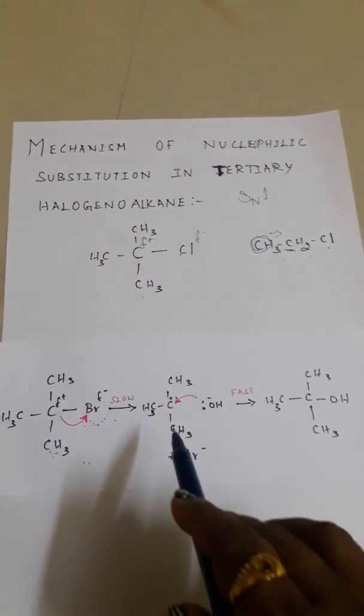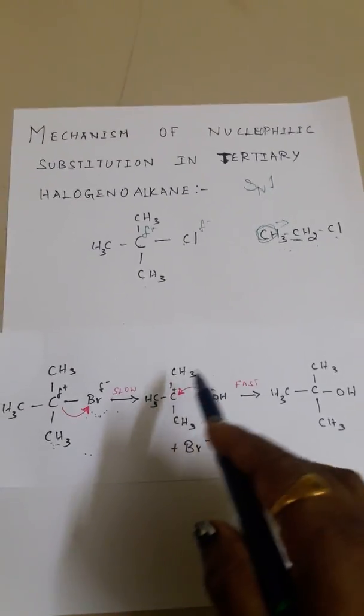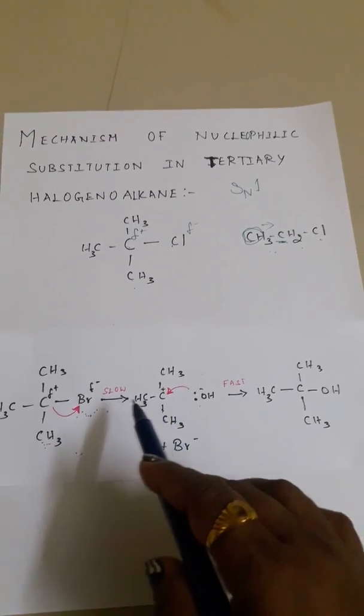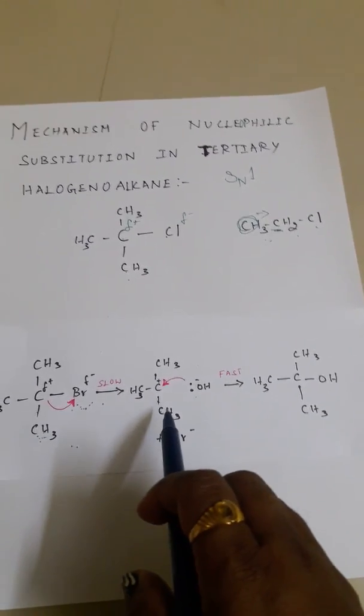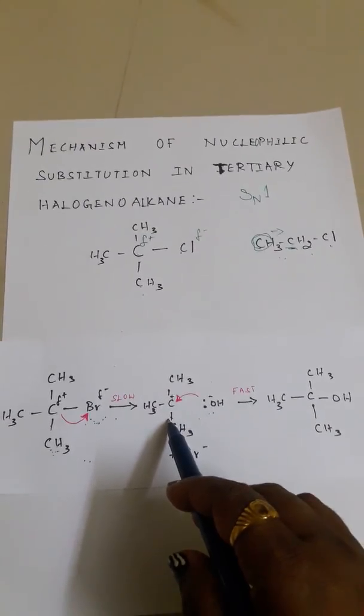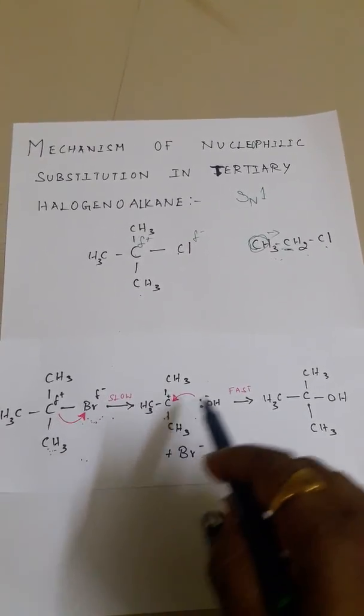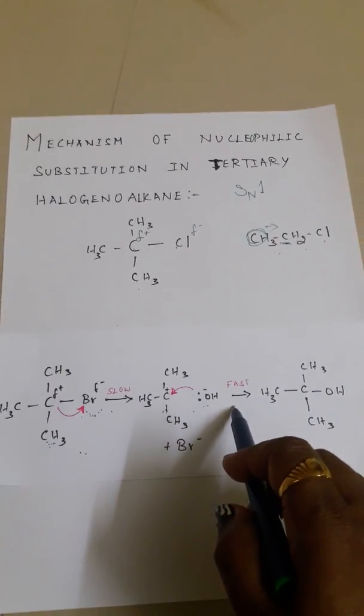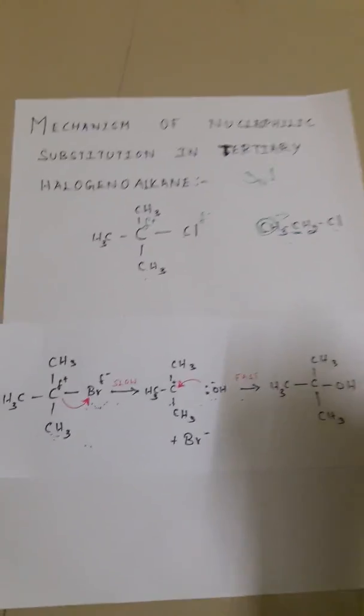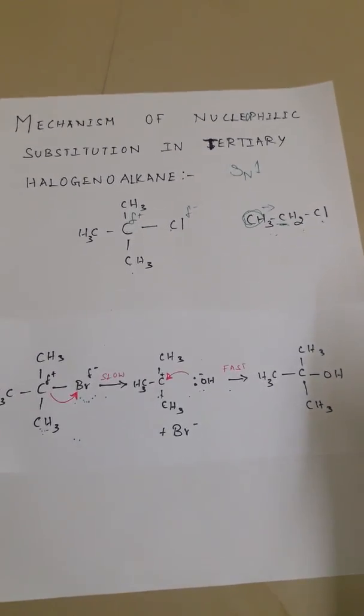You get the carbocation. Then the anion reacts with the carbocation. The hydroxyl donates its lone pair electron through dative bonding and immediately reacts with the cation. This is a fast reaction. We get tertiary alcohol as the end product.